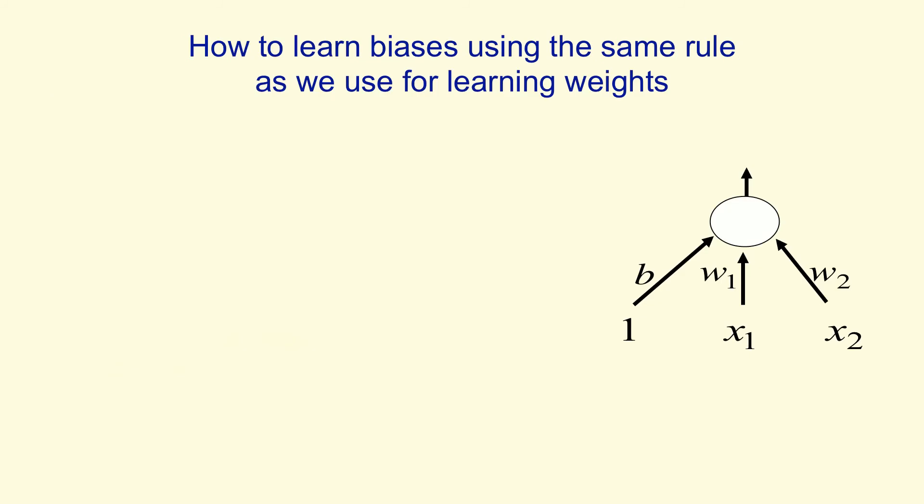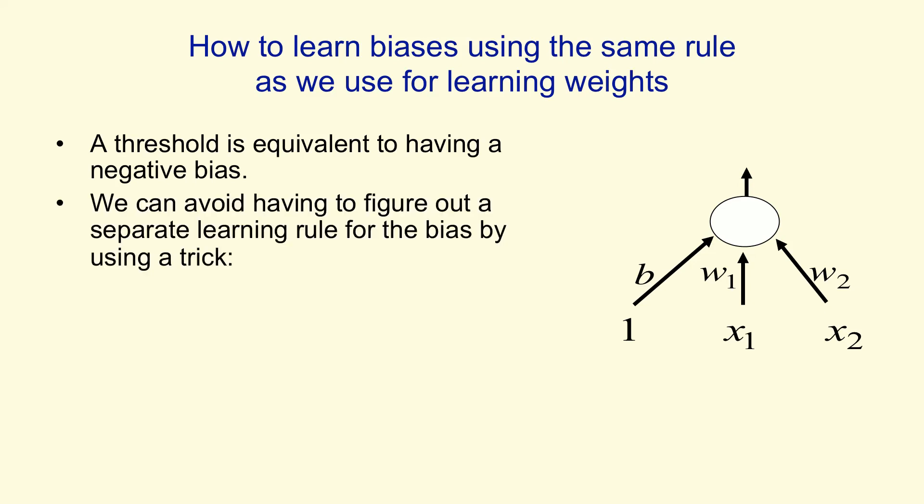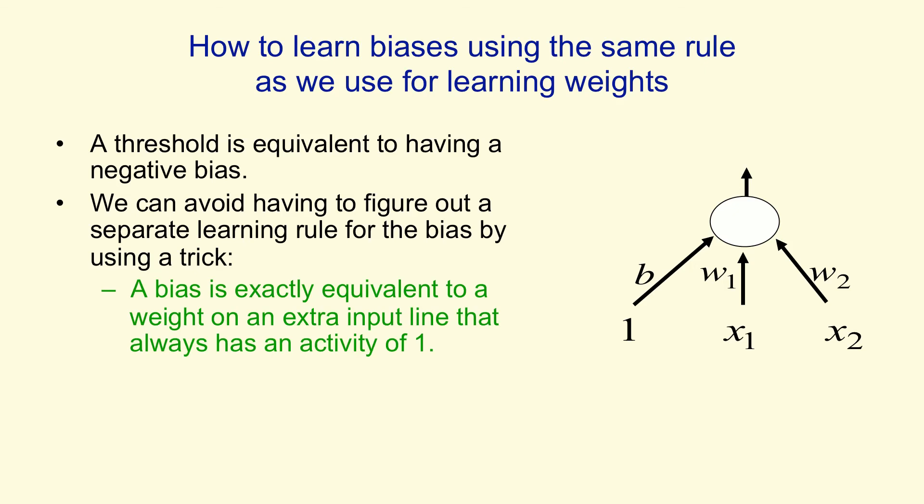We don't want to have to have a separate learning rule for learning biases. And it turns out we can treat biases just like weights. If we take every input vector and we stick a 1 on the front of it, then we treat the bias as like the weight on that first feature that always has a value of 1. So the bias is just the negative of the threshold. And using this trick, we don't need a separate learning rule for the bias. It's exactly equivalent to learning a weight on this extra input line.